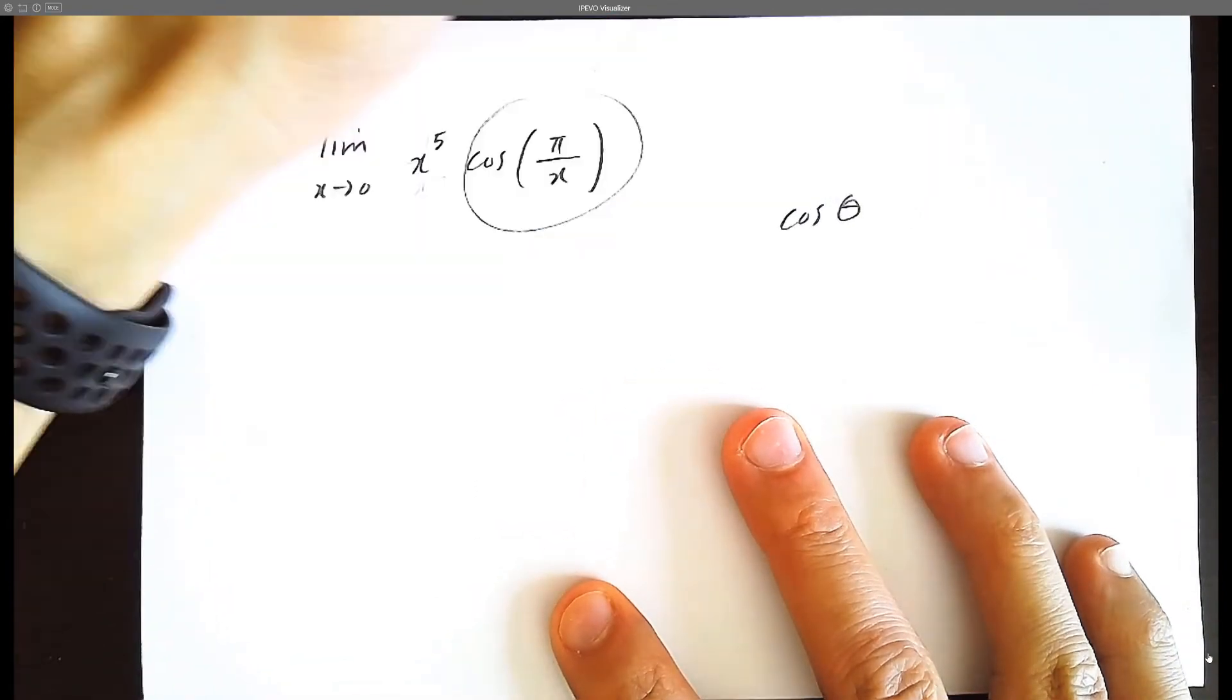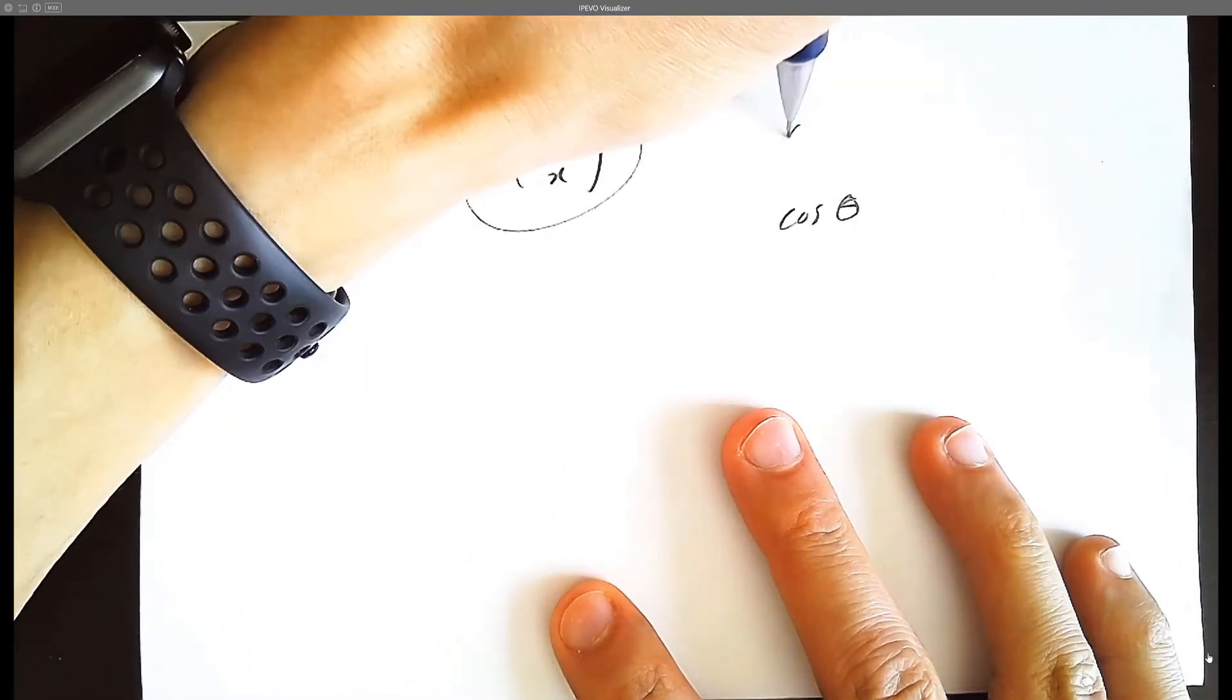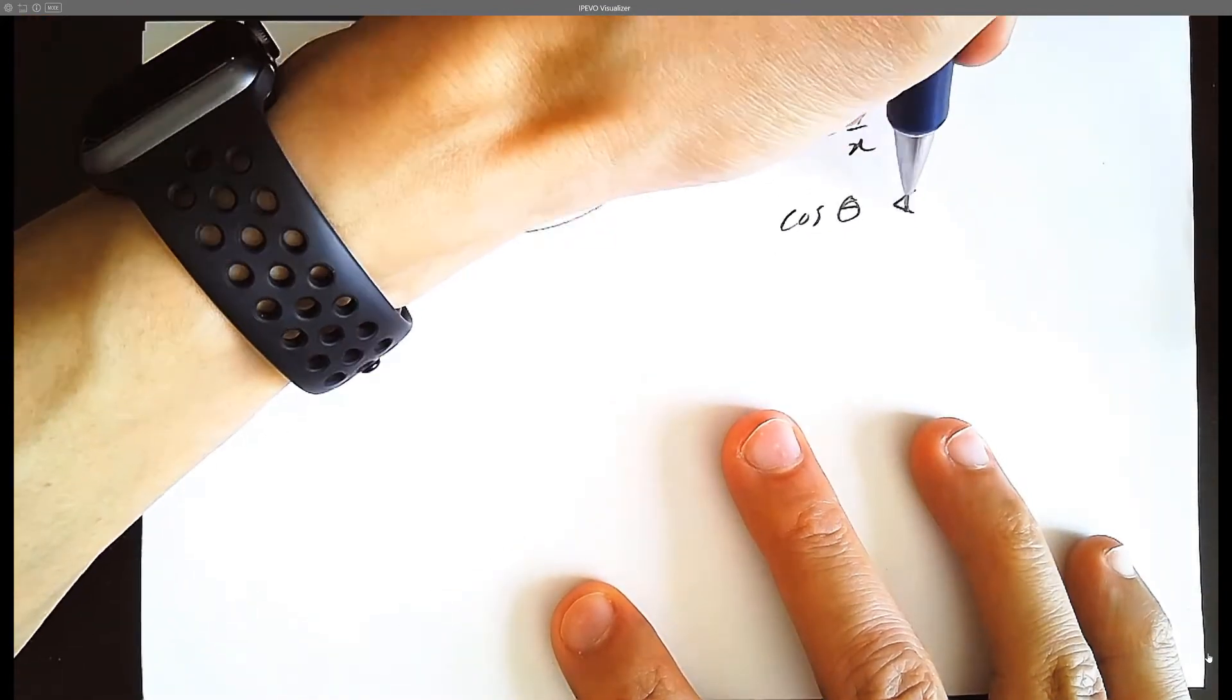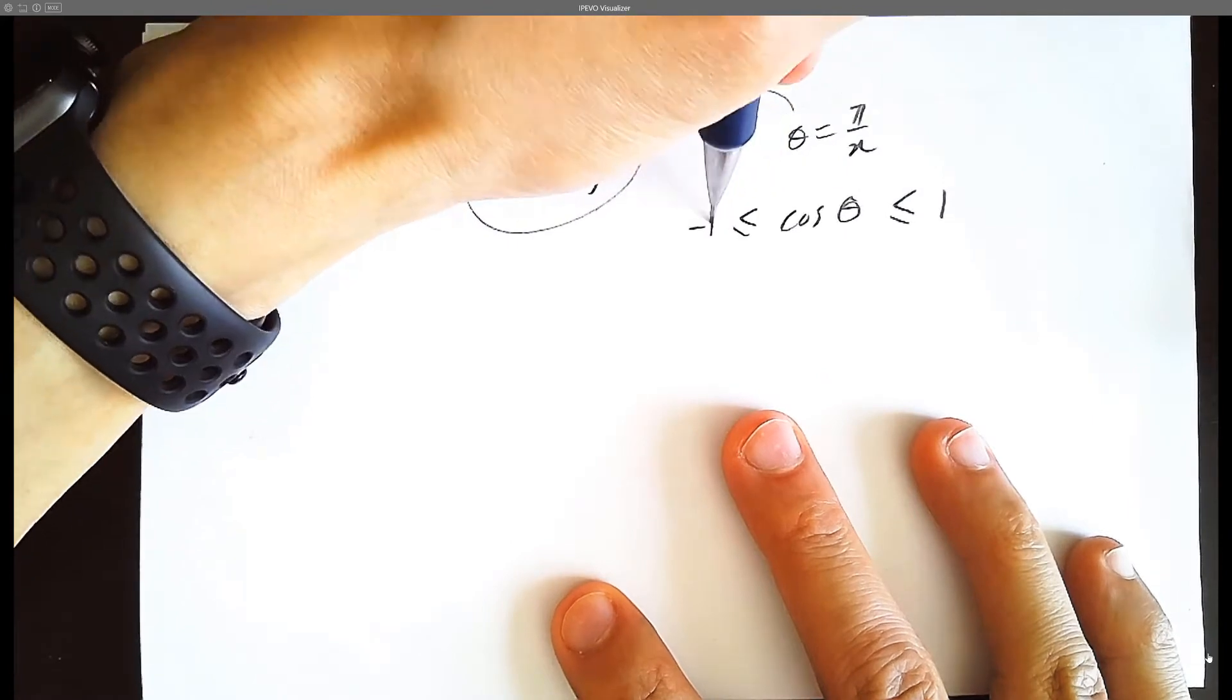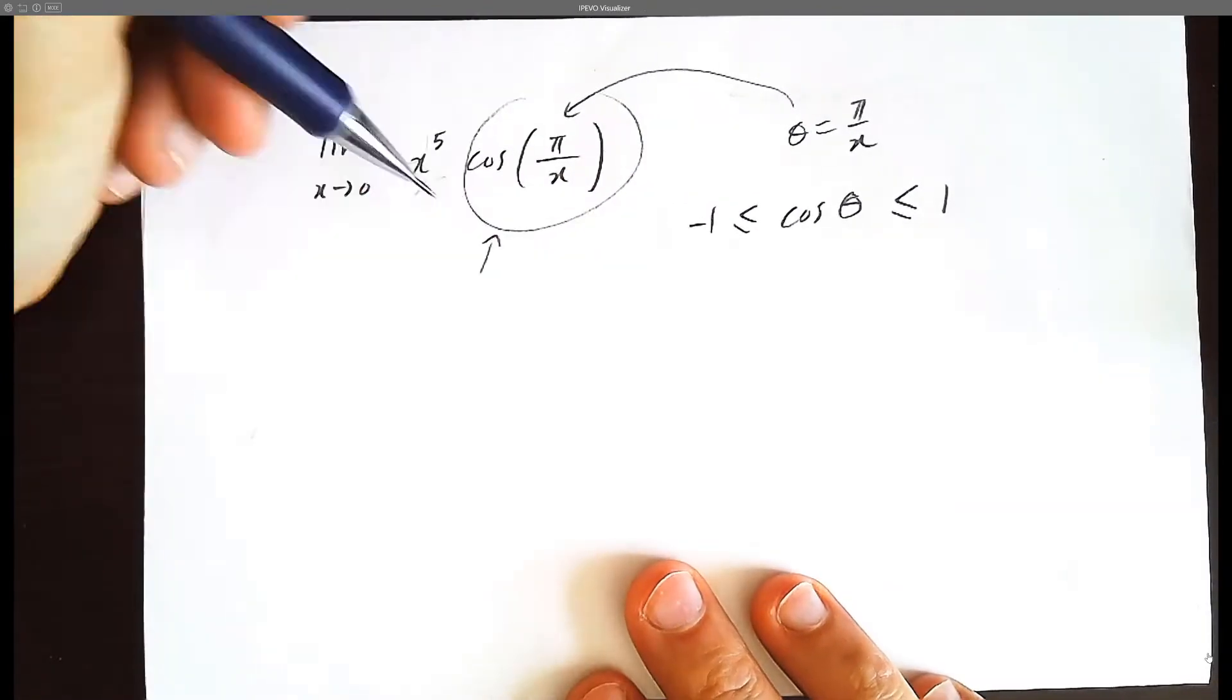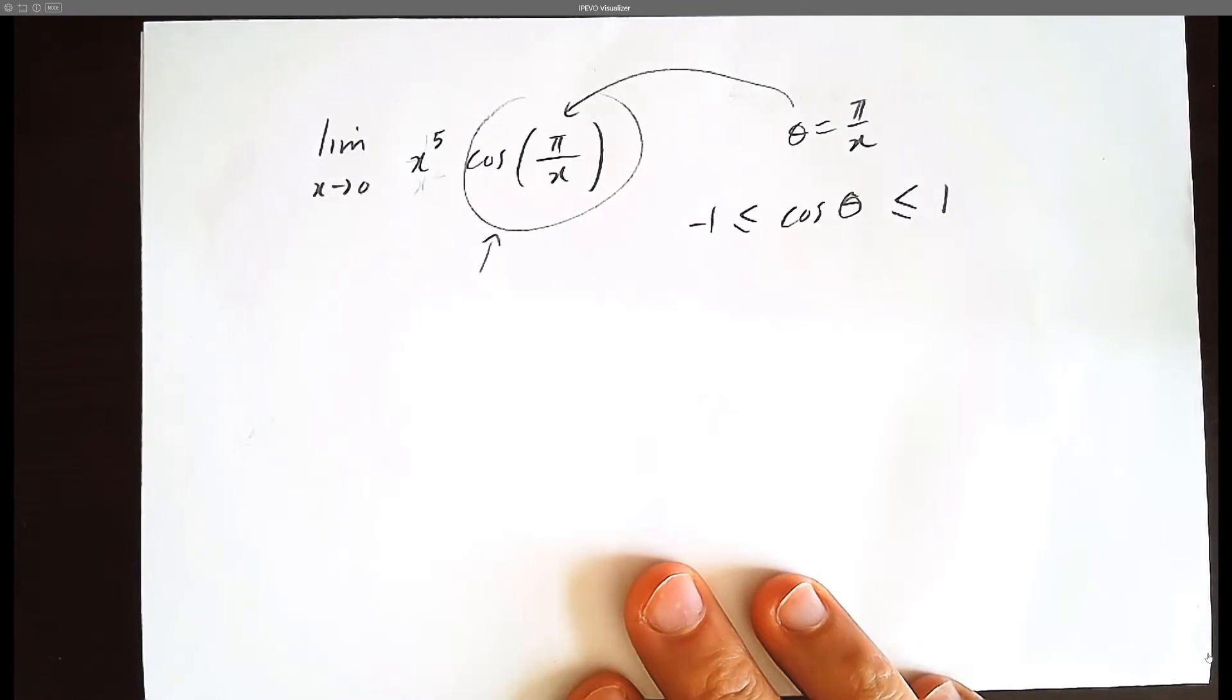Cosine of anything, theta, where theta equals the inside angle here, which is pi over x, must be between negative 1 and 1. That's the basic fact we need to memorize. So this function here must be between negative 1 and 1.